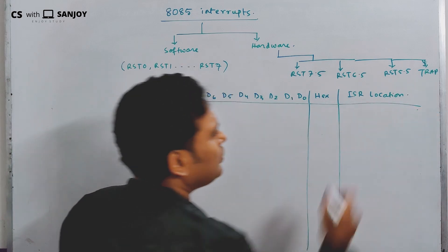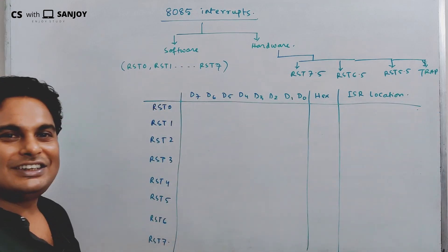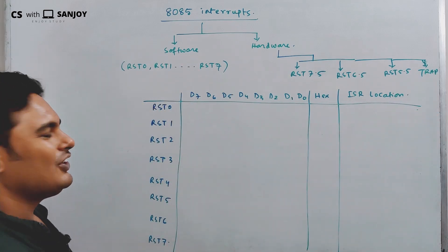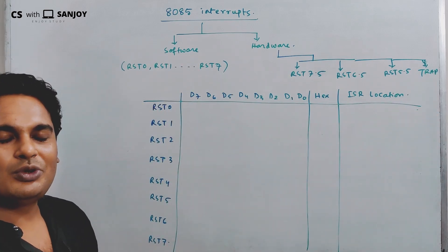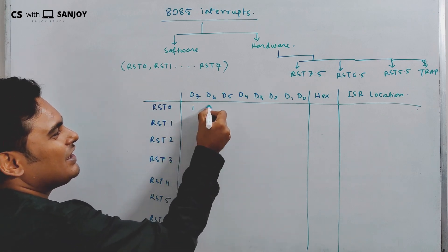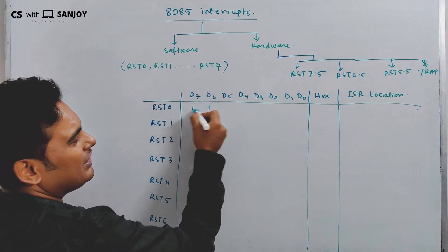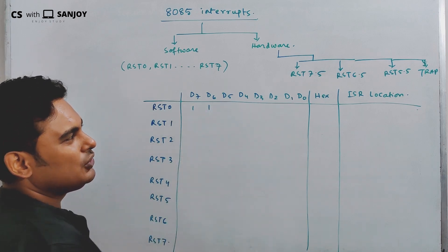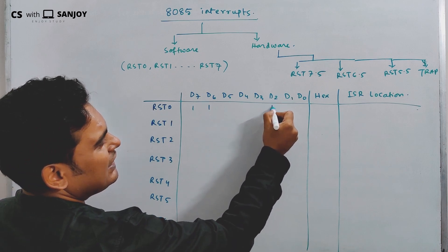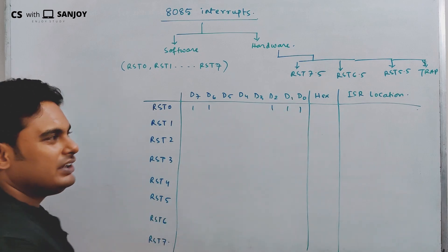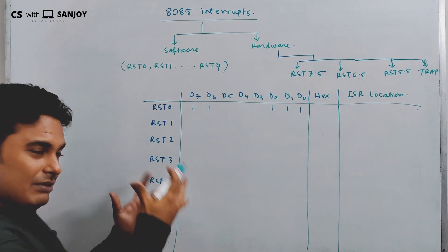Now for a quick and easy way of calculation, we are going to write the bit pattern using D7, D6, D2, D1, D0, and D3 columns to determine the hex codes.